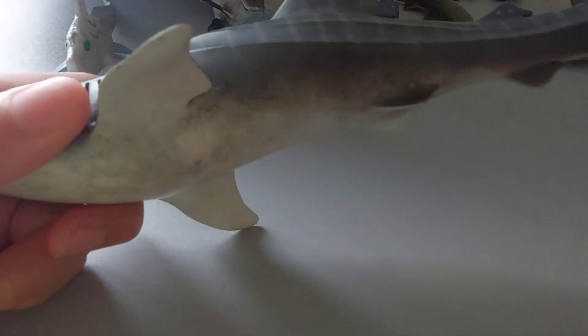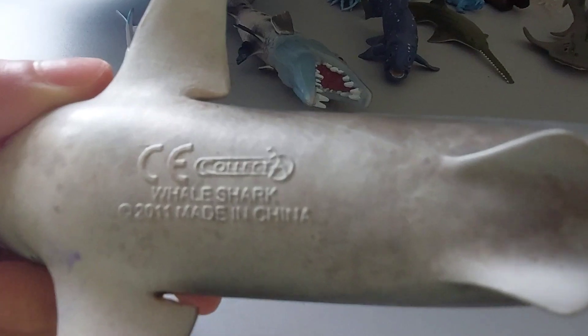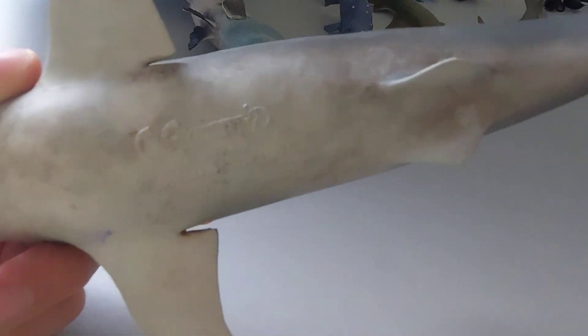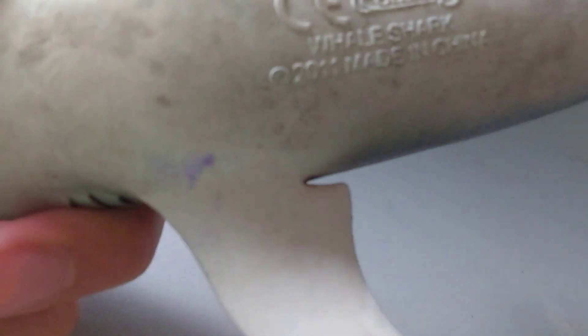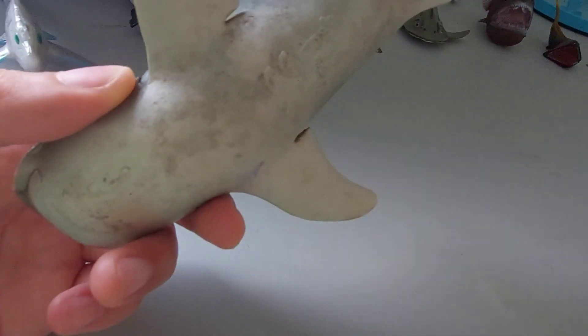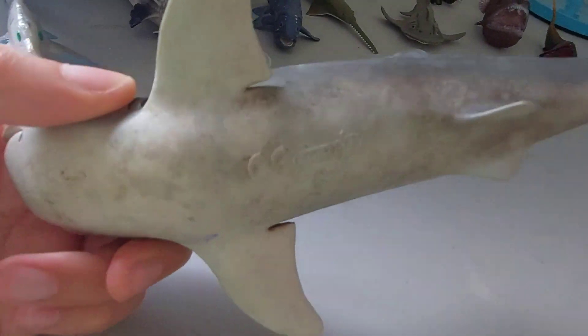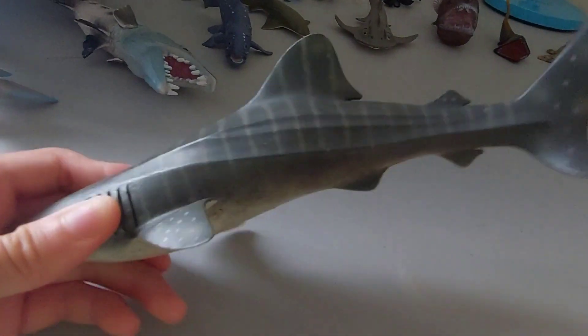The five gills are correct. This is the oldest CollectA figure, 2011 whale shark I have, but I just bought it recently. This is a second-hand whale shark, so I'm sorry for the stains. These new ones stain so easily.